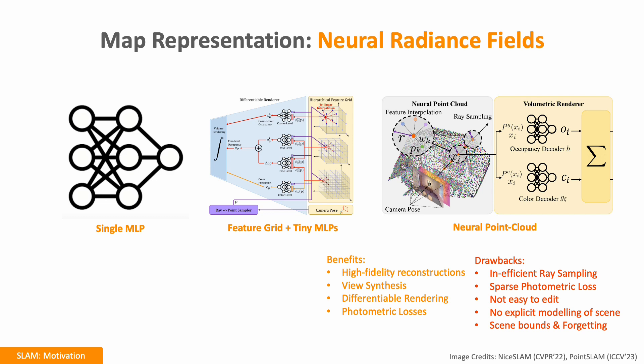On the other hand, given the rapid rise of neural radiance fields, Dense SLAM approaches have explored many variants of NERFs. However, these methods are inefficient due to ray sampling, require scene bounds, and are not easy to edit.